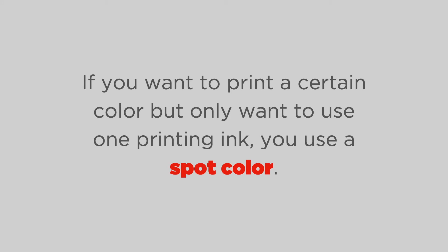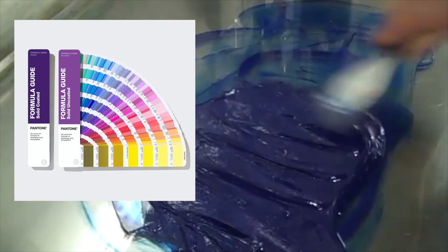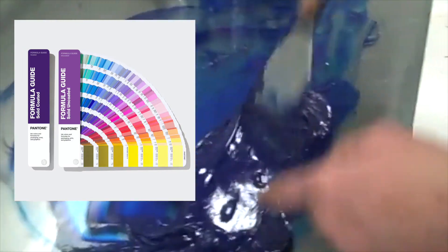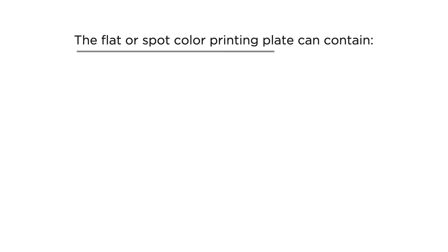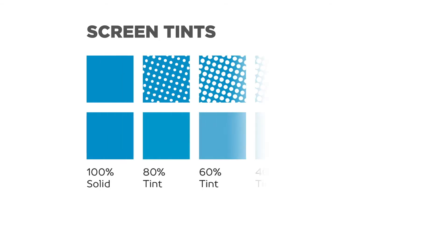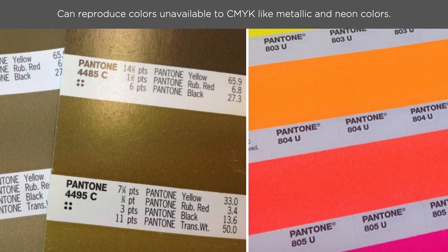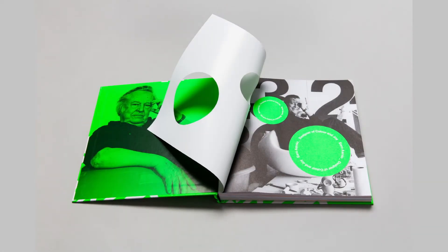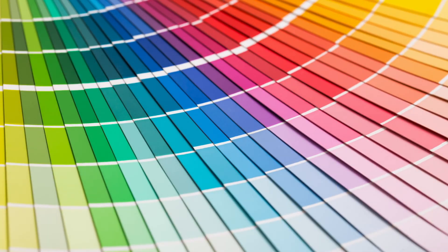If you want to print a certain color using only one printing ink — because of costs or for a certain aesthetic — you have to use a spot color. Spot or flat colors use pre-mixed colors, unlike CMYK, and these colors are based on the Pantone Matching System. Spot colors are opaque and are intended to stand alone when printed. You can print line copy in spot color as well as halftones, and you can modify the density of the halftone by screening it. One of the advantages of using spot colors is the ability to reproduce colors that CMYK can't produce, such as metallic and neon colors.